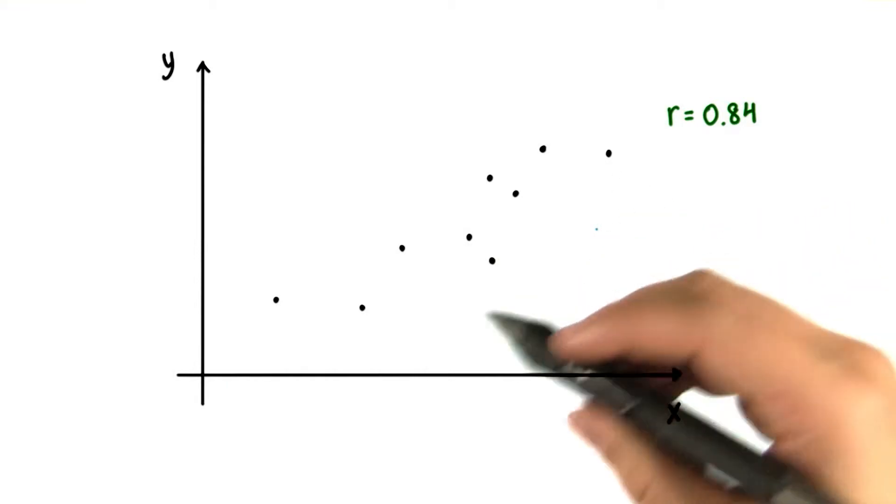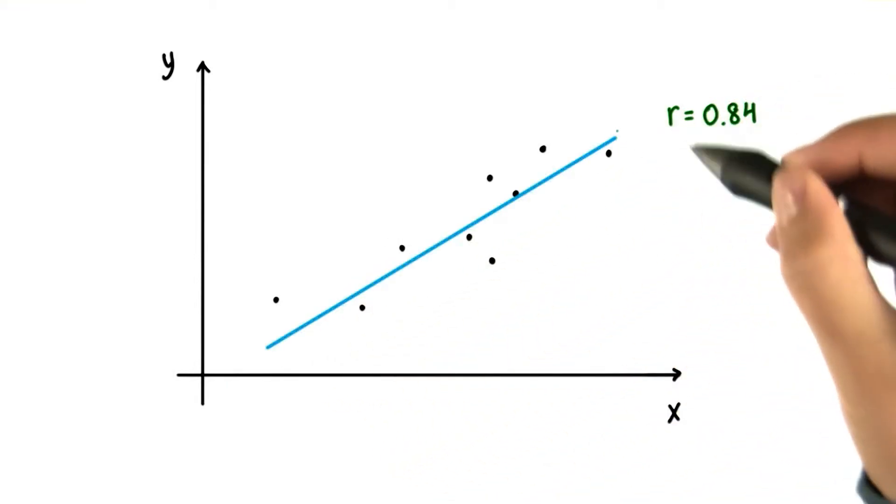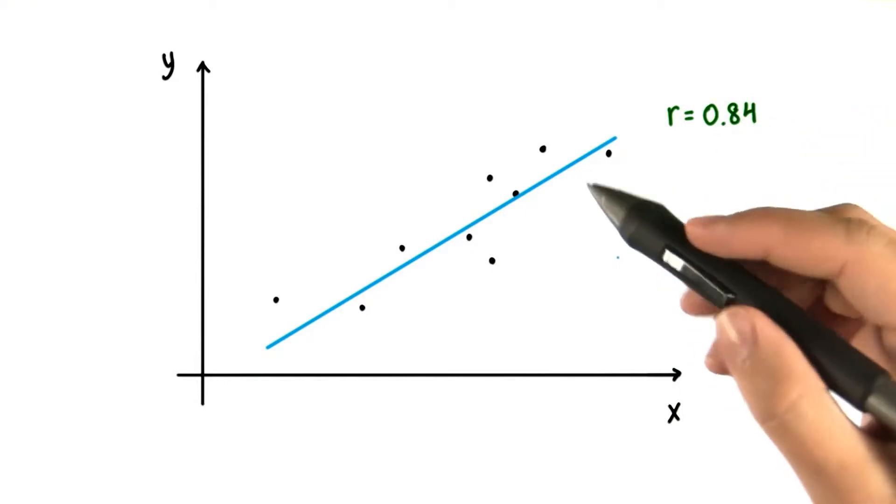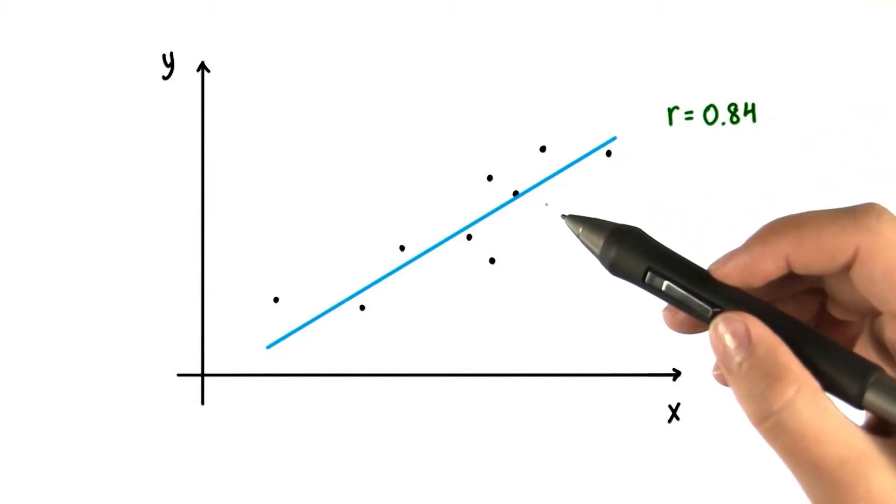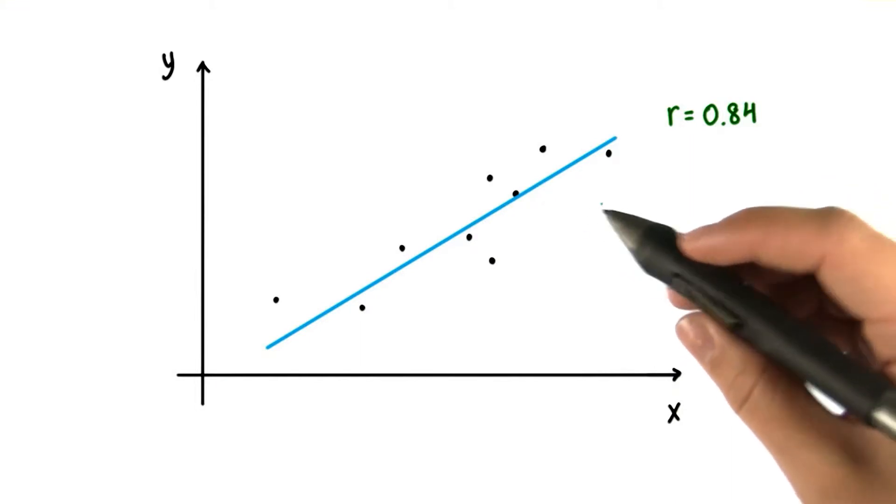We also noted that we can describe linear data using a straight line drawn through the middle of the data. In this lesson, we will discuss this straight line in more detail and explain why it's useful for describing linear relationships and making predictions.